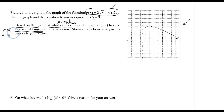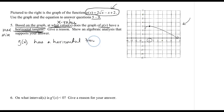I would see a horizontal tangent at a relative maximum or a relative minimum. Looking at the graph, there is one at approximately x equals 1. So g of x has a horizontal tangent at x equals 1.